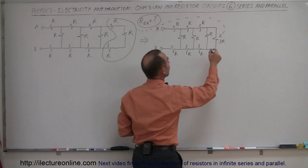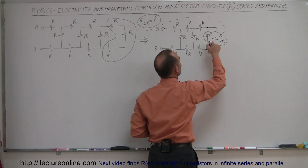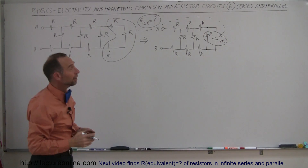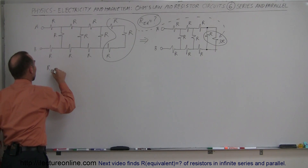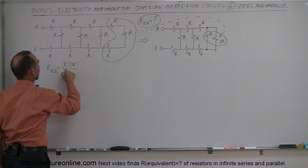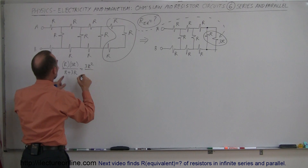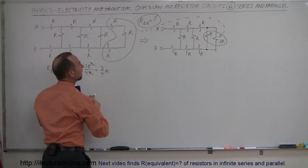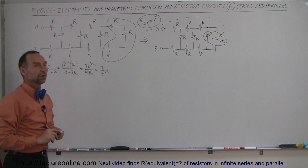The next step is to combine these two resistors right here because those are now easily seen in parallel. You take that branch point to that branch point — going from that point to this point you can either go through the R resistor or the 3R resistor, and therefore they're in parallel. When you have two in parallel, the equivalent resistance is equal to the product over the sum. So this is going to be R times 3R which is 3R² divided by 3R plus R which is 4R, leaving us with 3/4 R.